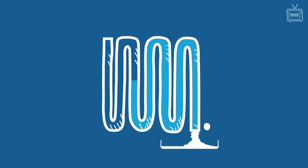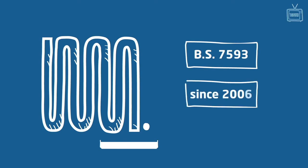Baxi recommends you thoroughly flush the system according to the guidance given in British Standards 7593, the code of practice for treatment of water in domestic hot water central heating systems. This has been a requirement of the building regulations since 2006.